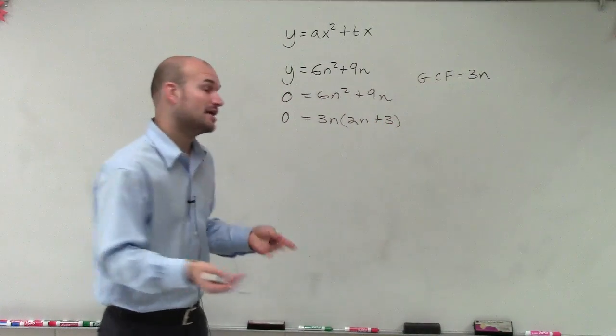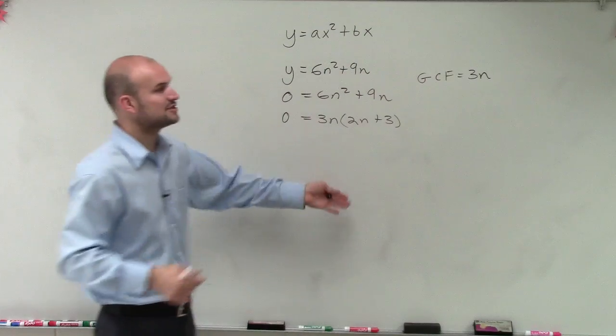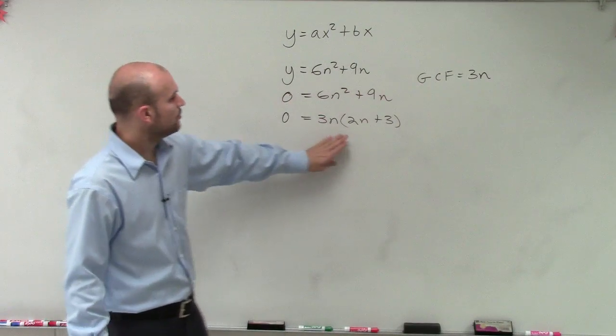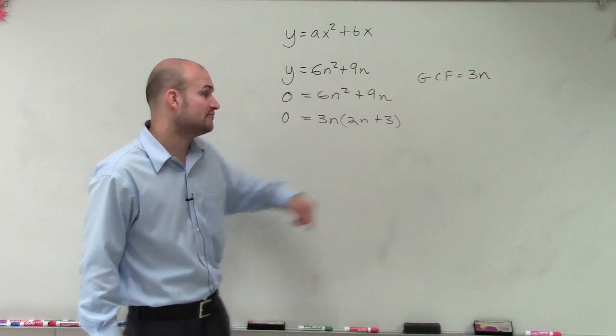And again, we can check our answer by applying the distributive property to make sure we get back our original solution. Well, now that we have it a product of two factors, now I can use my zero product property.